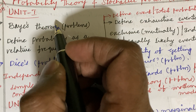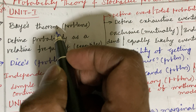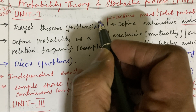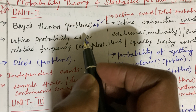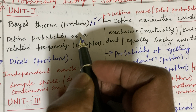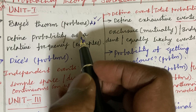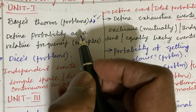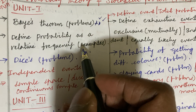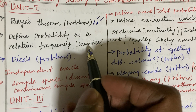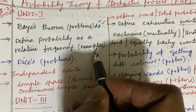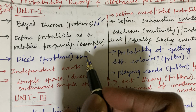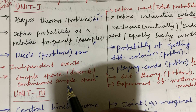The first and foremost is Unit 1. The first question is Bayes' theorem — this is considered a sure-shot question. There are no separate short questions; as you know, the question paper pattern has Part A as well as Part B. Define probability as a relative frequency along with an example. Problems related to dice are also considered sure-shot questions.